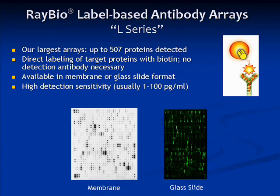The label-based array, or L-series, is our largest series of arrays with up to 507 proteins detected. In this array, the target proteins within the sample are directly labeled with biotin, which eliminates the need for a biotin-conjugated detection antibody. The L-series is available in either membrane or glass slide format, and has a very high detection sensitivity of usually 1 to 100 pg per ml. Shown below are the output data from the L-series arrays. Computer software is available to facilitate array-to-map cross-referencing.